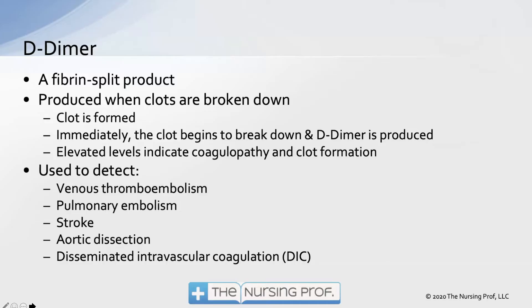So if you think about getting a cut on your hand, eventually that cut is going to scab over and the scab is eventually going to be removed. It's removed through this process of breaking down clots. The product of the broken down clot is called a fibrin split product.